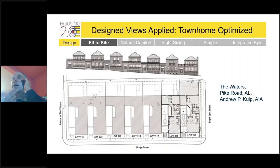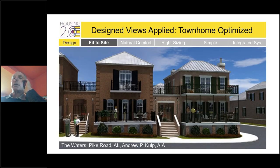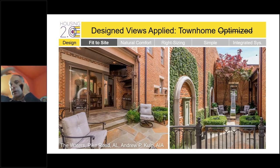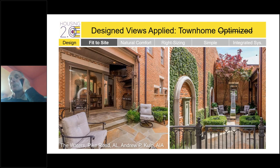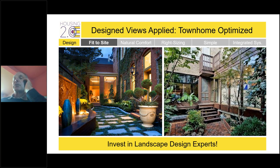Researching found a project in Pike Road, Alabama — The Waters — where you can see the exact design strategy employed: the full front porch, the full room in front, and the entry in the middle of the courtyard. The actual project looks amazing. The one disappointment was the courtyards — they could have been so much better. Much more expertly designed courtyards, as the example shows, are just transformative. In the hands of experts, landscaping and hardscaping always elevates the whole project, so it's always a great investment to make.